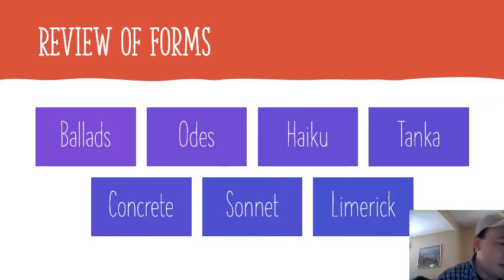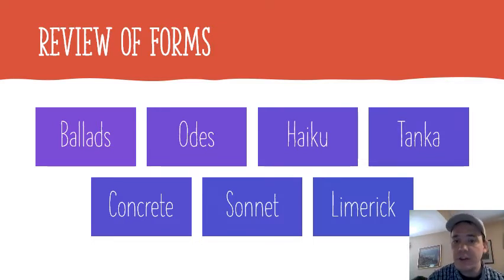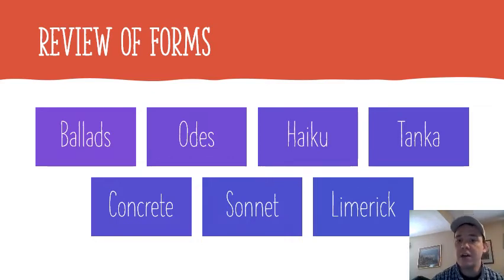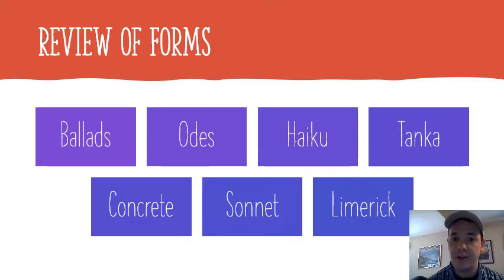We talked about odes and how odes are praising someone or something — usually they're written to an object. Haiku, as you recall, was a lyric form of poetry; it wasn't telling a story but was trying to get an emotion across, usually nature-related. And tanka was a form of poetry that had a certain set of syllables per line and had a shift after the first three lines, moving from the object and scene to focus on an emotion the poet felt in response to that object.